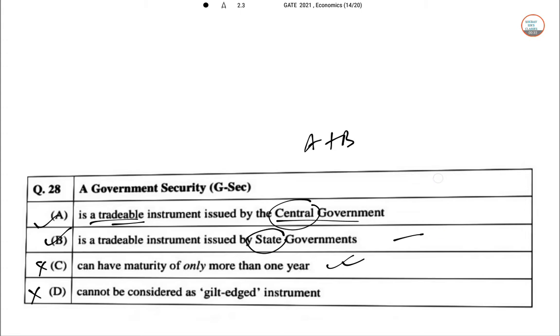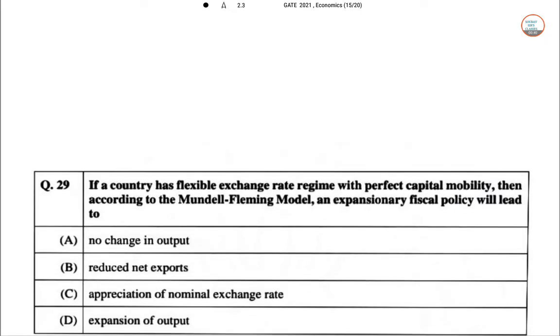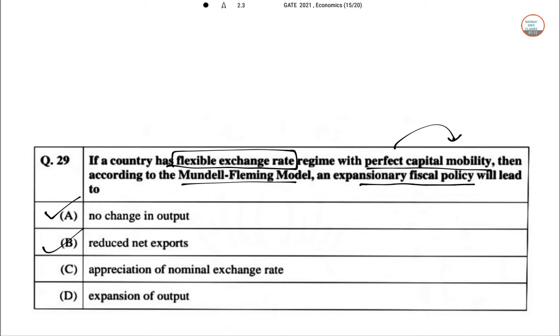Let's go to the next one. Q29: In a country with flexible exchange rate regime with perfect capital mobility from one sector to another, according to Mundell-Fleming model, expansionary fiscal policy will lead to what? So obviously, expansionary fiscal policy will reduce national exchange rate, but output will show no change or there will be a contraction. So Q29 answer is A plus B plus C.